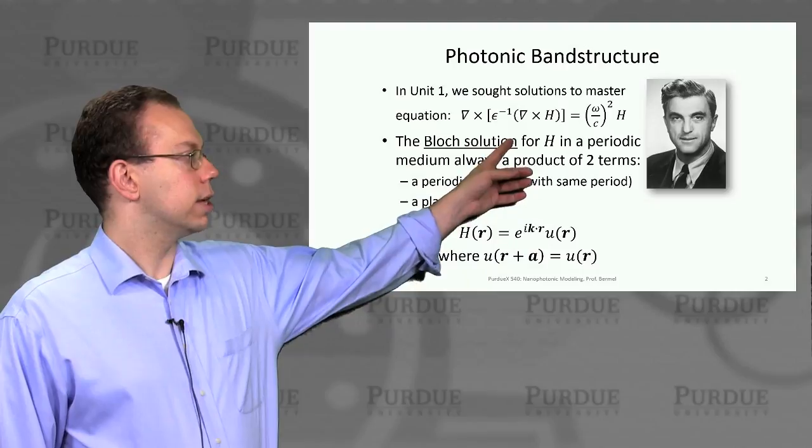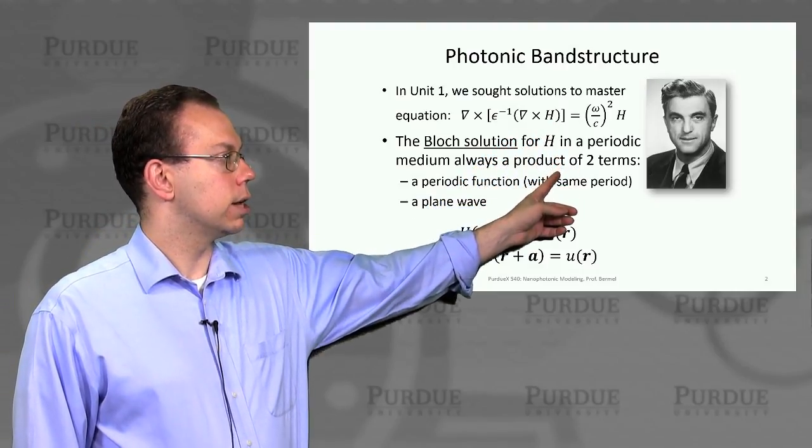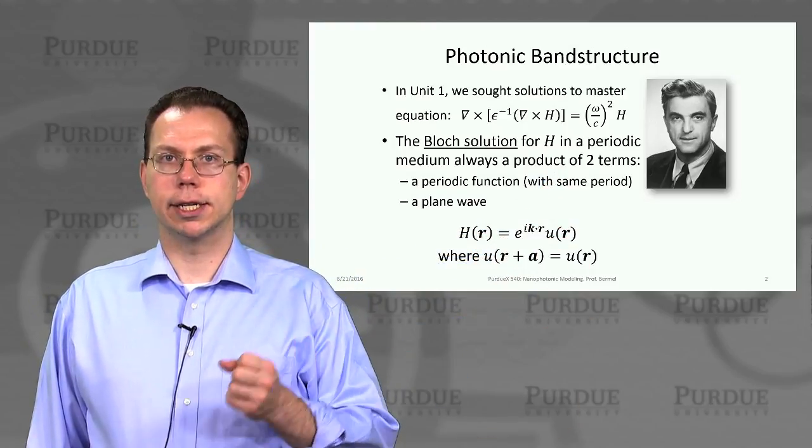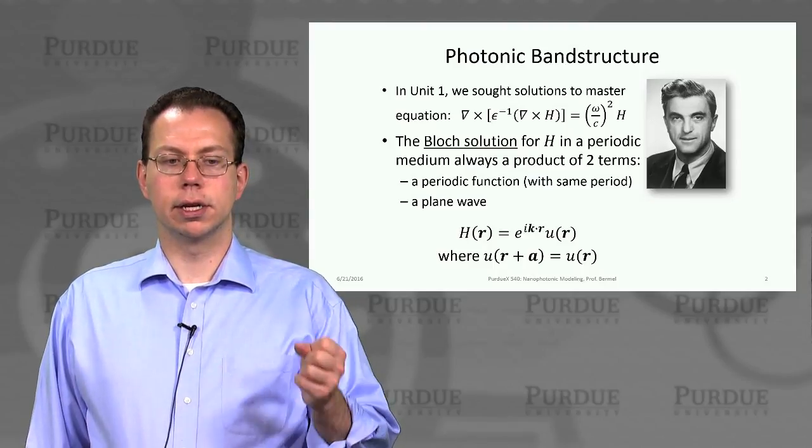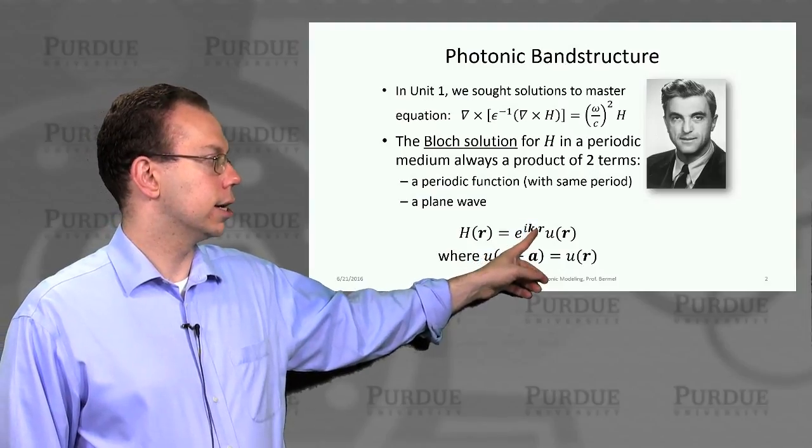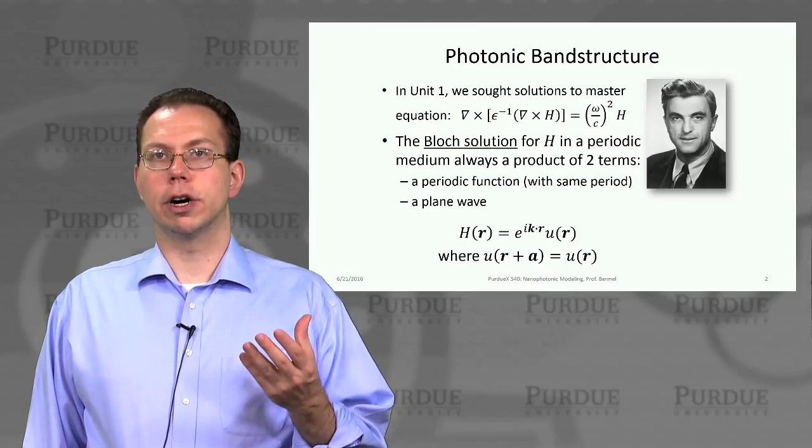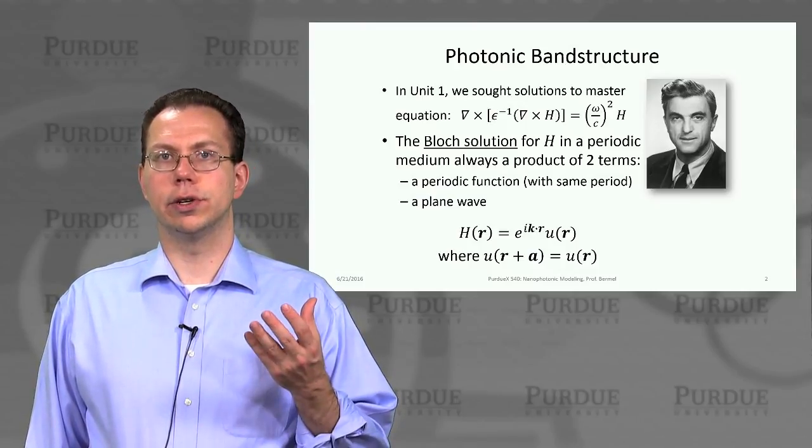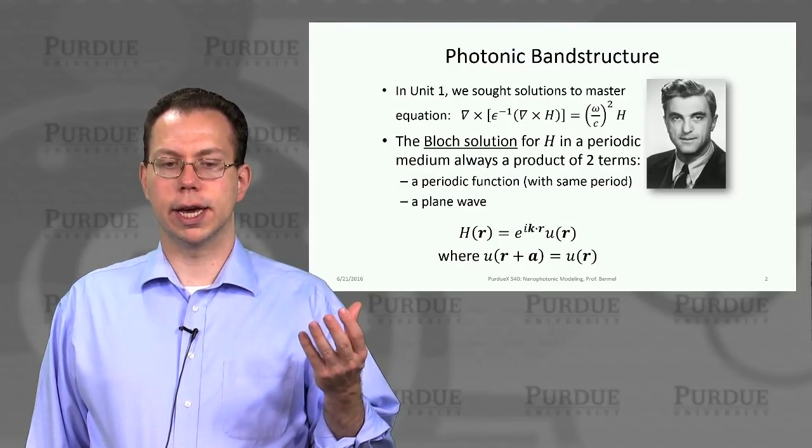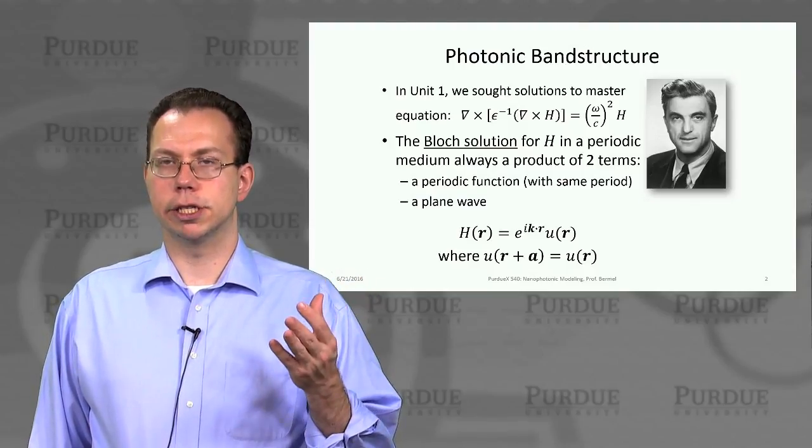And this block solution for the magnetic field H has product of two terms: a periodic function with the same period as the periodicity imposed on the system times a plane wave. And so we always wrote that basically as e to the i k dot r times u of r. And remember that u of r can be broken down into a representation in the Fourier domain, so you got sum over something like h sub g times e to the i k plus g dot r.